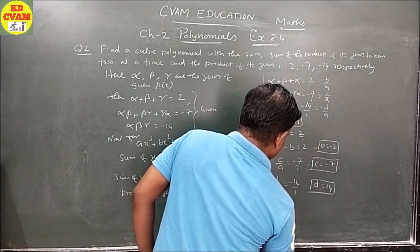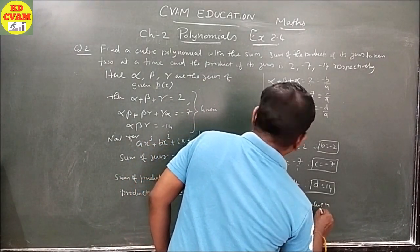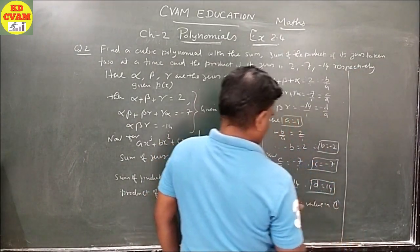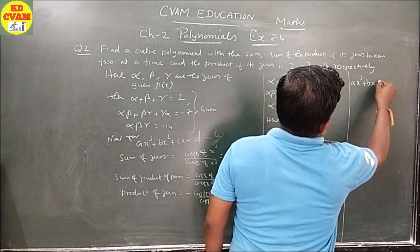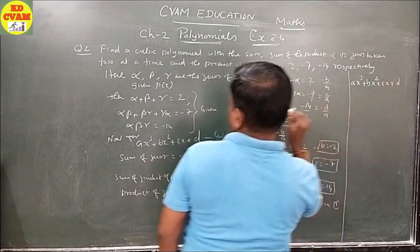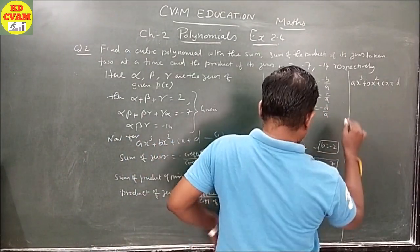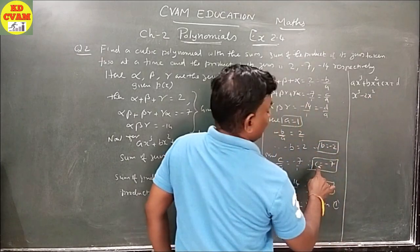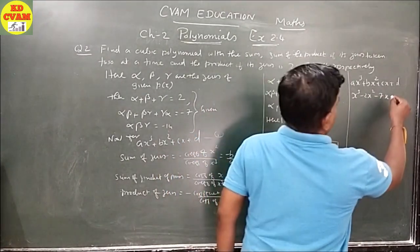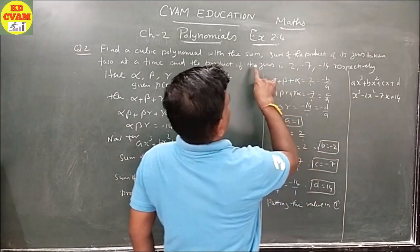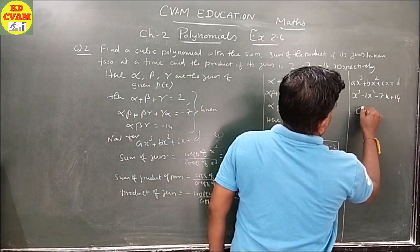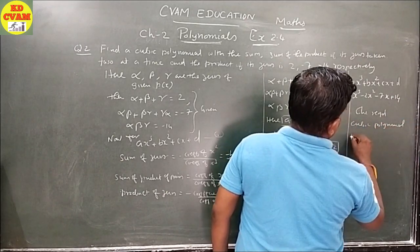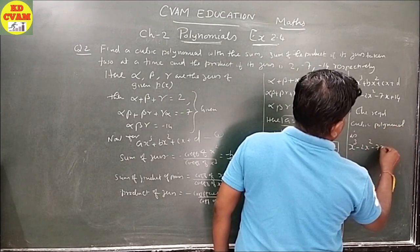Putting these values into the general form Ax³ + Bx² + Cx + D: the required cubic polynomial is P(X) = x³ - 2x² - 7x + 14.